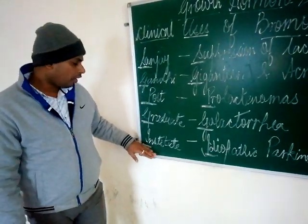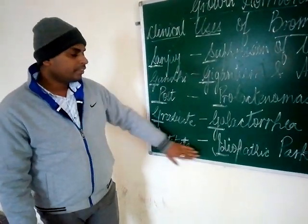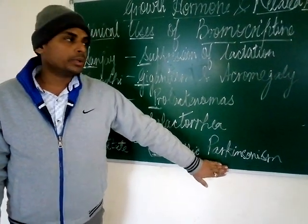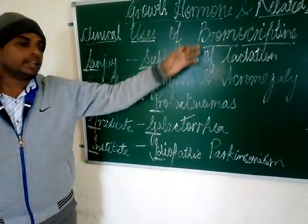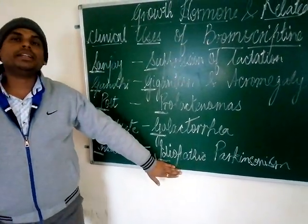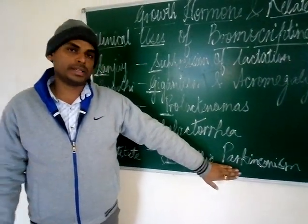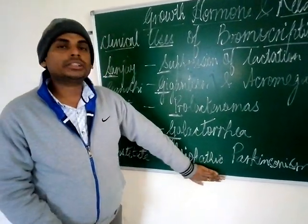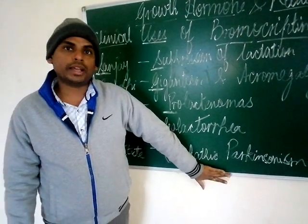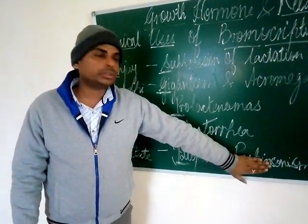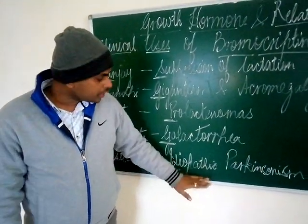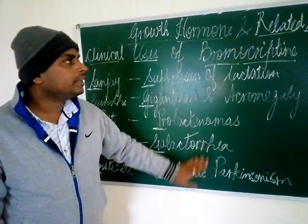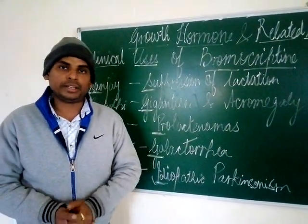The I of institute corresponds to idiopathic Parkinsonism. Idiopathic Parkinsonism can be seen in patients treated with bromocriptine. The term idiopathic is used where the cause of the Parkinsonism is not known.